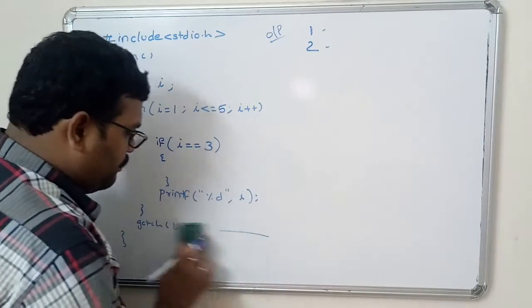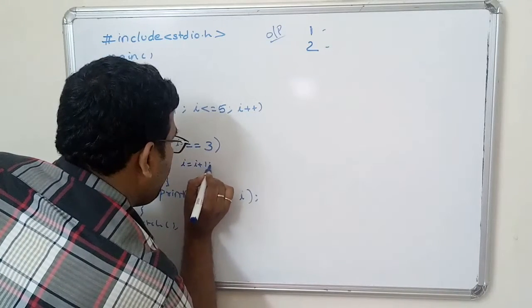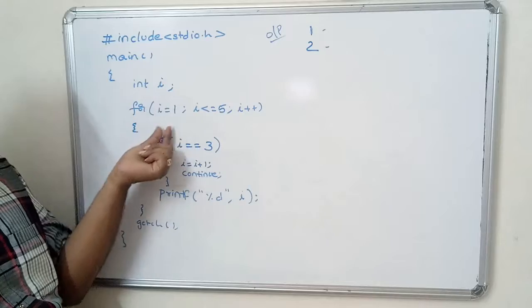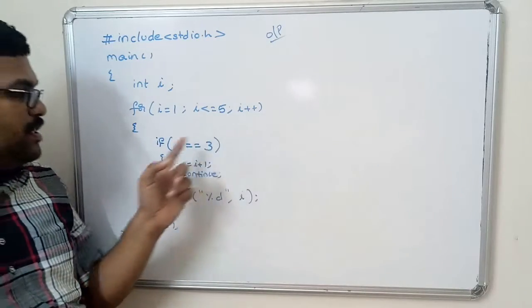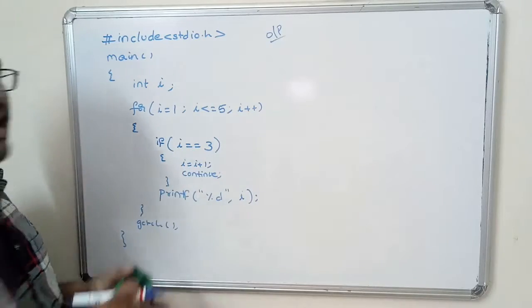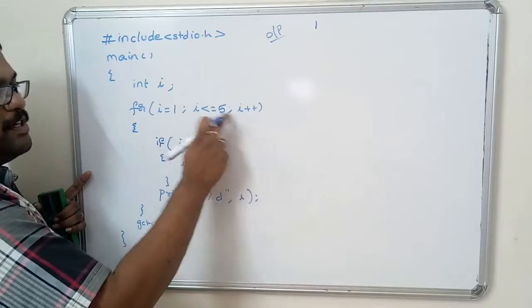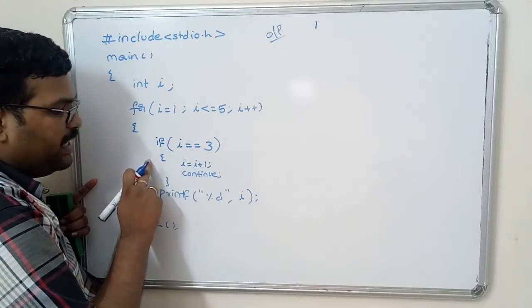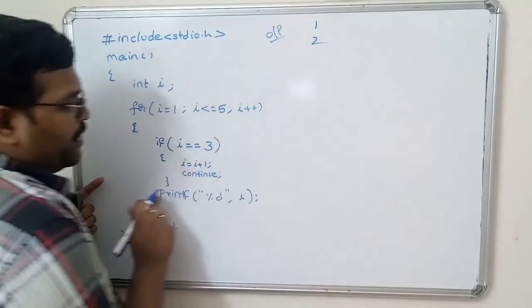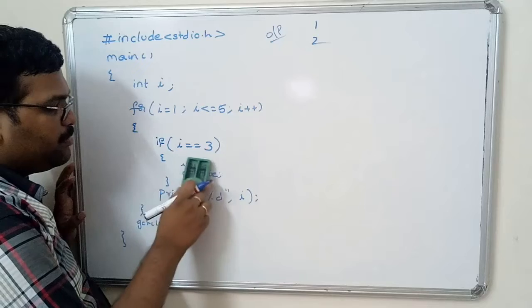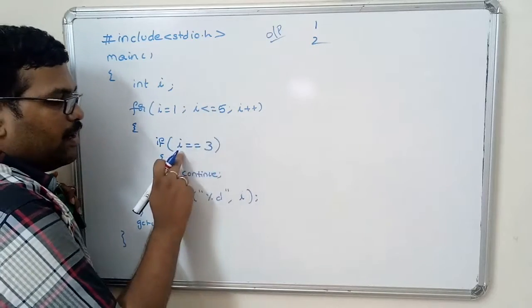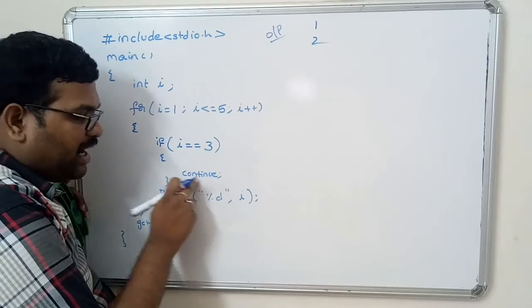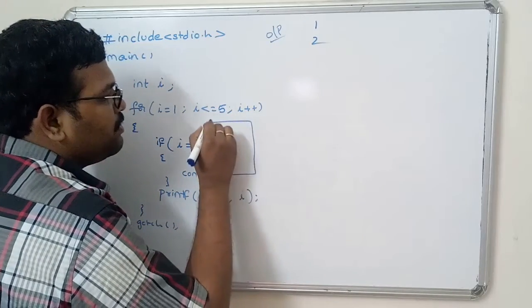Now if we replace break with continue — the same statements. i is equal to 1, so 1 less than or equal to 5, i plus plus. 1 equals equals 3 — false. So directly print i, that means 1. Next, i plus plus, so i is 2. 2 less than or equal to 5 — the condition is true. Again the control will enter into the loop. 2 equals equals 3 — the condition fails. So it doesn't enter into the if block. Print f i — that means 2. Now i becomes 3. 3 less than or equal to 5. 3 equals equals 3 — the condition is true. So the control will enter into this if condition. Here we have written continue. Whenever the control executes this continue, it skips the present iteration — all the remaining statements will be ignored for the current iteration and once again it moves on to the condition check.